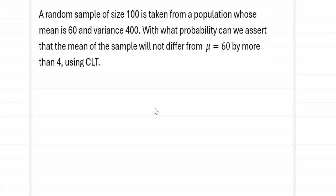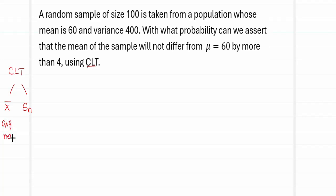We will take the clues from the question. In the question, we need to identify what is being asked and then how to apply and go about it. The first clue word is CLT — central limit theorem. CLT deals with two types of problems: one is the X̄ problem and the other is the SN problem. X̄ stands for the average or mean of the data, and SN stands for the sum or total of the data or the random variables. The keyword given here is 'mean', therefore we are going to apply the CLT for X̄.